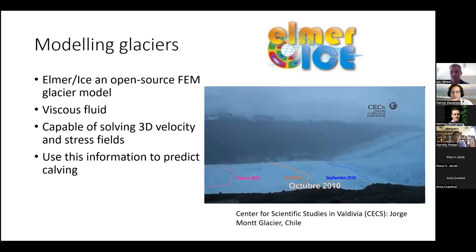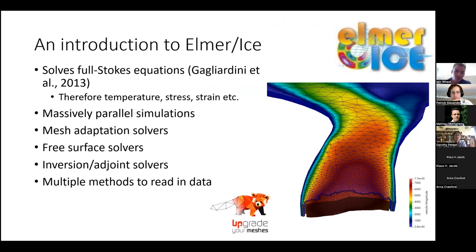Elmer Ice is an open source finite element model. It's capable of solving the full Stokes equations in 3D, and therefore anything related to that — whether that's stress, temperature, strain, etc. It's capable of massively parallel simulations, where you can run it simultaneously on a large number of nodes or processes.